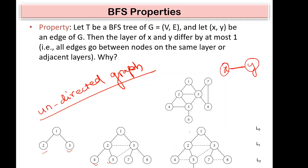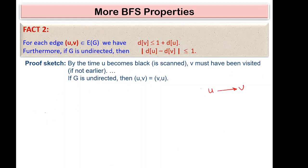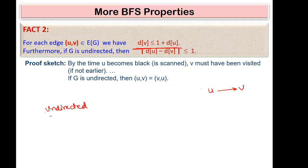In an undirected graph, if there is a direct edge between nodes x and y, they lie in layers that differ by at most one. For a directed graph, if there is a directed edge from u to v, then the distance of v is less than or equal to 1 plus the distance of u. For an undirected graph, the difference of their distances is less than or equal to 1.